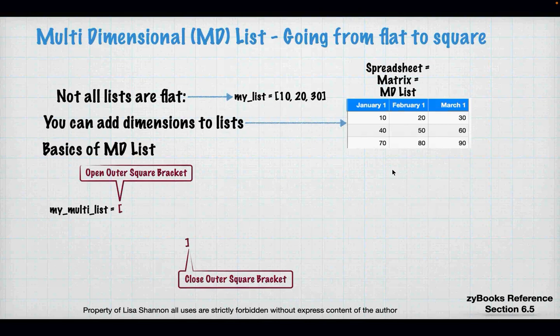Lists can hold other lists, they can hold dictionaries — lists can hold lots of things. We want to understand how to do a multi-dimensional list. If any of you have ever used a spreadsheet, you've used a multi-dimensional list. A multi-dimensional list is just a matrix — rows and columns. If you're dealing with complex data structures, it's very important to understand how they work from a looping perspective.